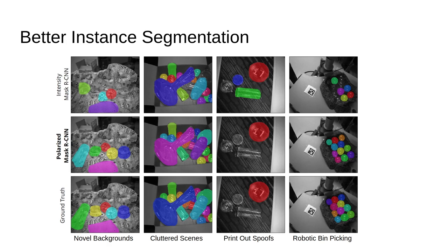So what are the results? First we just get better instance segmentation across the board. If you look at the generalization to novel backgrounds intensity Mask R-CNN has a hard time but polarized Mask R-CNN does much better. Then in cluttered scenes we do better on the edges. In printouts we're not able to be fooled by the spoofs on the top. And then finally we combine all this for good robotic bin picking.